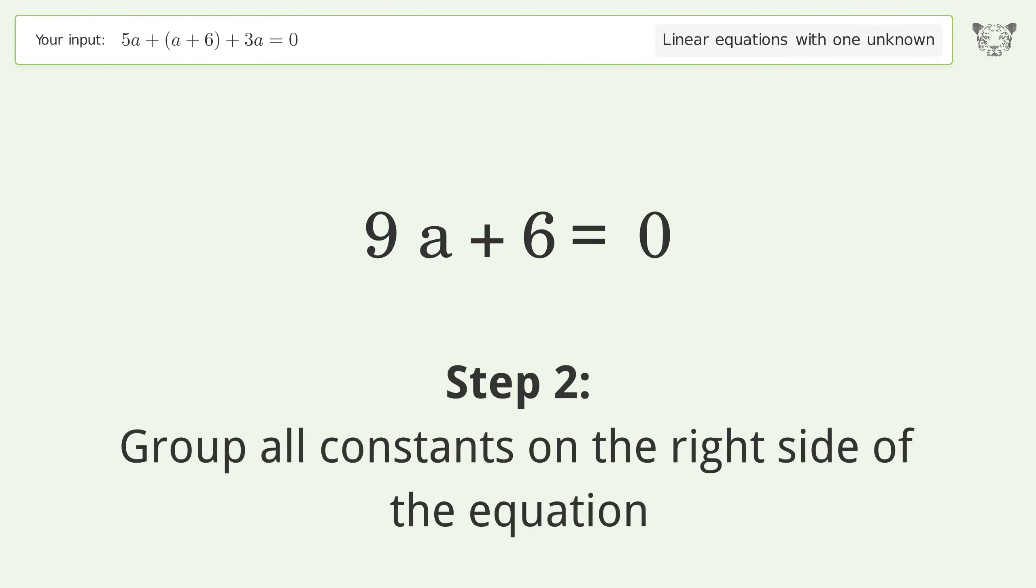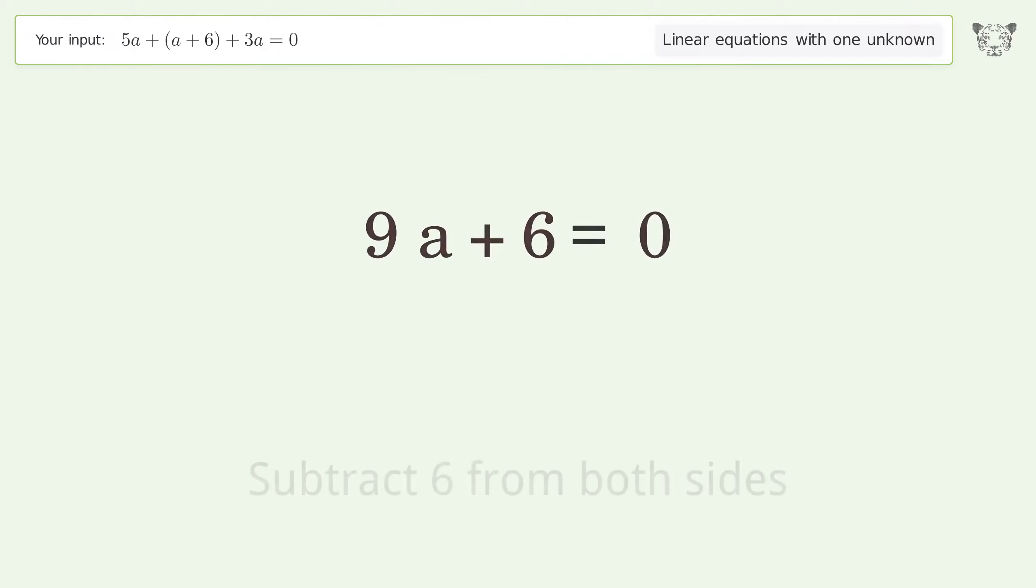Group all constants on the right side of the equation. Subtract 6 from both sides, then simplify the arithmetic.